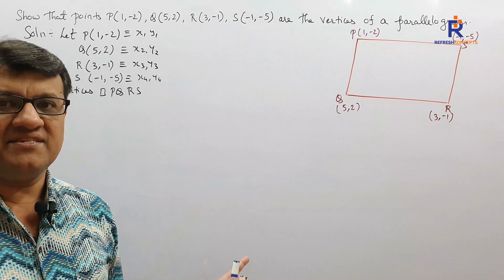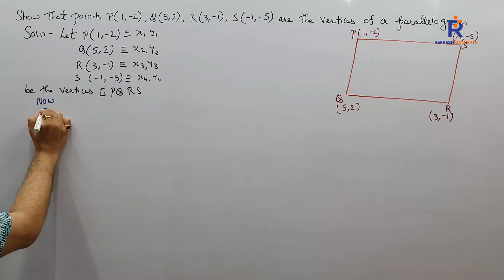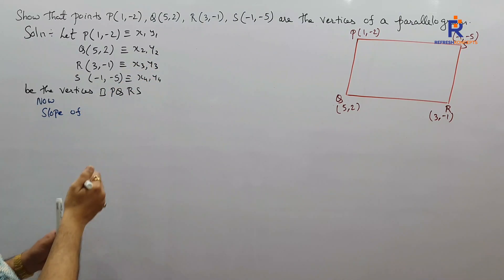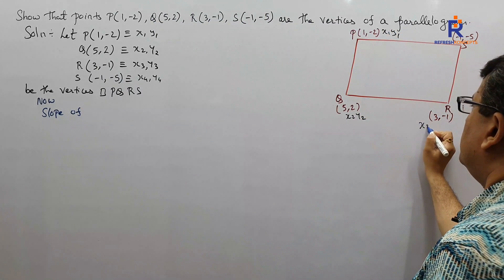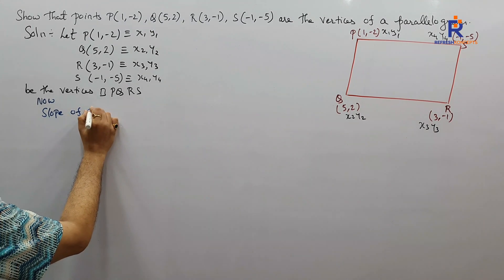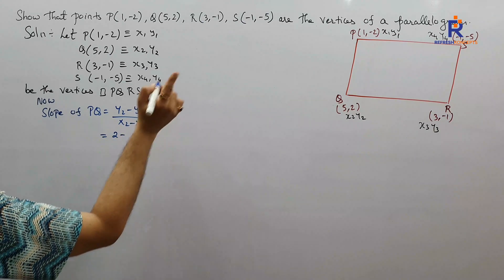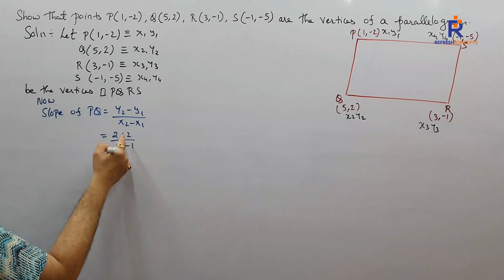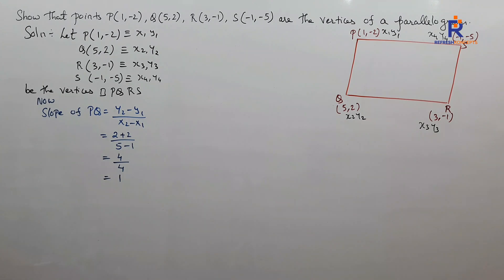As stated earlier, we are going to find the slope of each side: PQ, QR, SR, and PS. Slope of PQ = (y2 − y1) / (x2 − x1) = (2 − (−2)) / (5 − 1) = 4/4 = 1. So slope of PQ = 1. This is equation number 1.